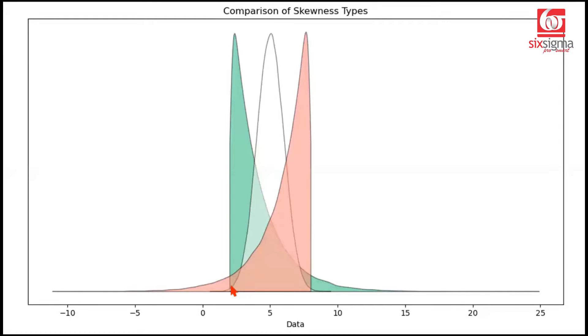A right skewed distribution would be the one which would have its right arm stretched. Likewise, a left skewed distribution would be the one which will have its left arm stretched. There is a distortion in the symmetry that comes.